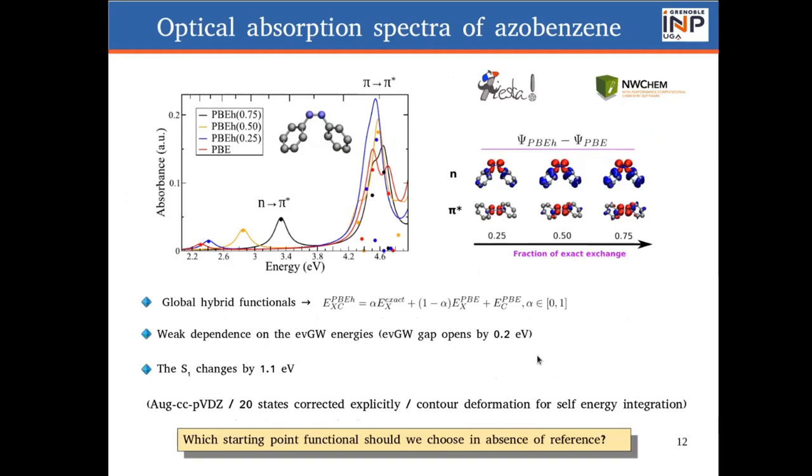Coming to the results, the first thing that we did was to compute the optical absorption spectrum of azobenzene. We computed this using global hybrid functionals by changing the amount of exact exchange from 0 to 27%. The first thing that we noticed is that there is a huge dependence on the first excitation, the n to pi-star excitation, while the pi to pi-star excitation is rather constant. And this dependence occurs because the GW gap is rather constant throughout the tuning of the starting point eigenvalues.